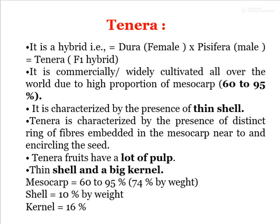The second variety is Tenera. It is a hybrid of Dura (female) and Pisifera (male) and is commercially and widely cultivated all over the world due to the high proportion of mesocarp — 60 to 95%. It is characterized by the presence of a thin shell and a distinct ring of fibers embedded in the mesocarp near and encircling the seeds. Tenera fruits have a lot of pulp, thin shell, and big kernel. Mesocarp is 60 to 95%, 74% by weight; shell 10%; kernel 16%.